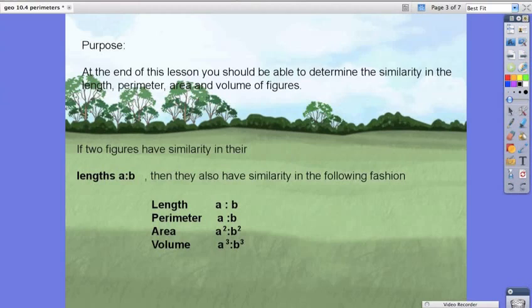So if the ratio of length is a to b, perimeter is a to b, the area is a squared to b squared, and volume is a cubed to b cubed.